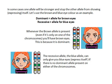In some cases, one allele will be stronger and stop the other allele from showing, or we say expressing itself. Let's use brown and blue eyes as an example. The dominant allele in this case is brown eyes, and the recessive allele is blue eyes. When we say dominant, we're talking about the stronger one. Whenever the brown allele is present, even if it's only one of them, it means you end up with brown eyes, as the daughter has here. That's because it's dominant — it overpowers the blue allele and stops it from being expressed.